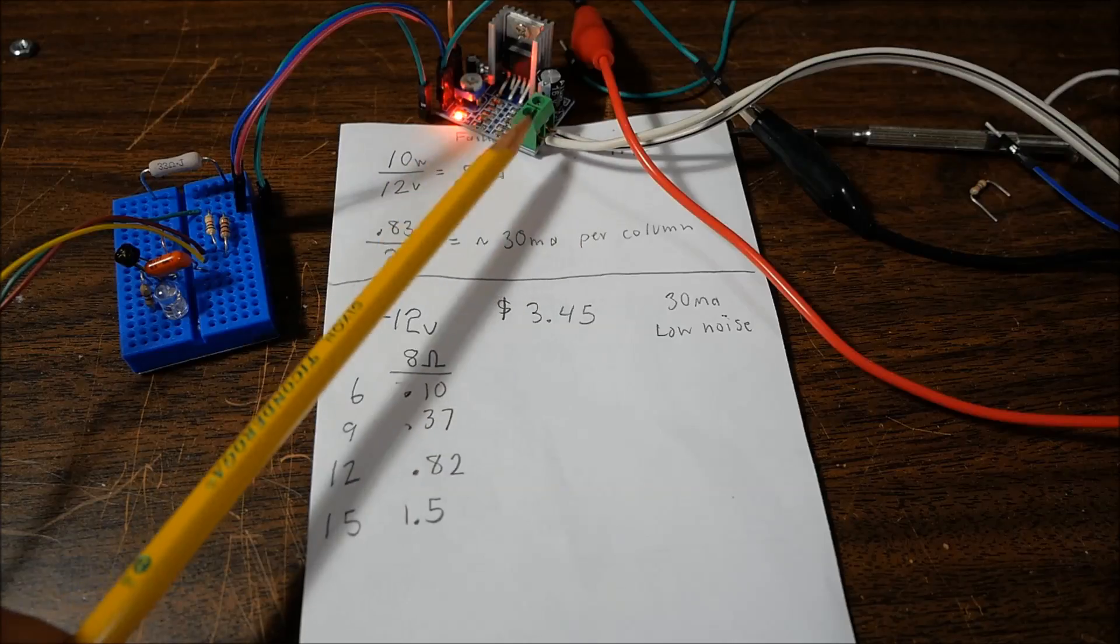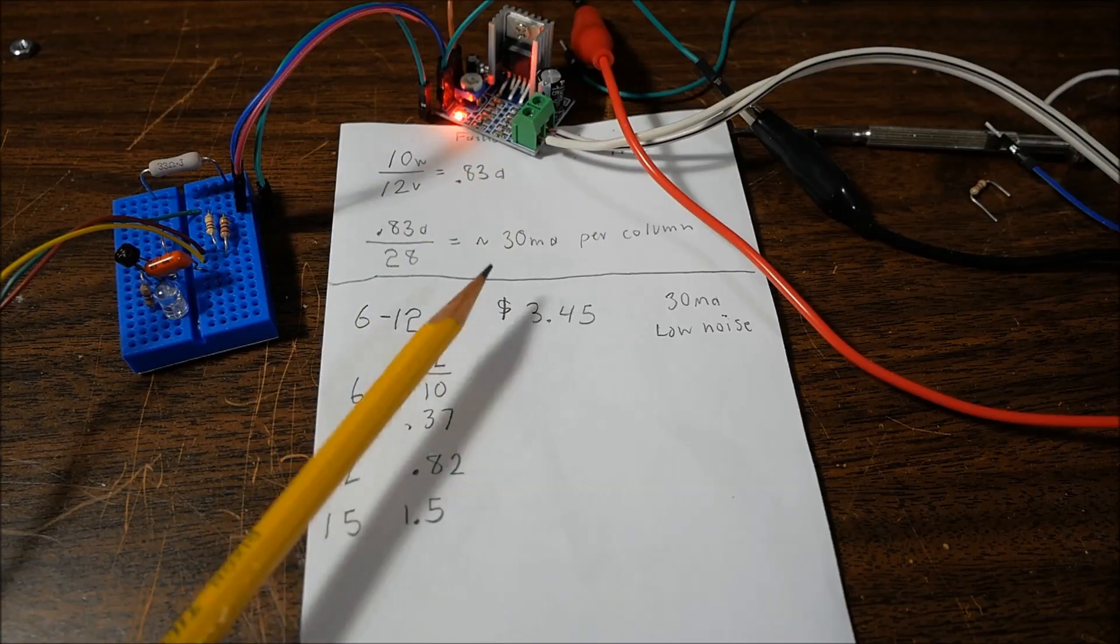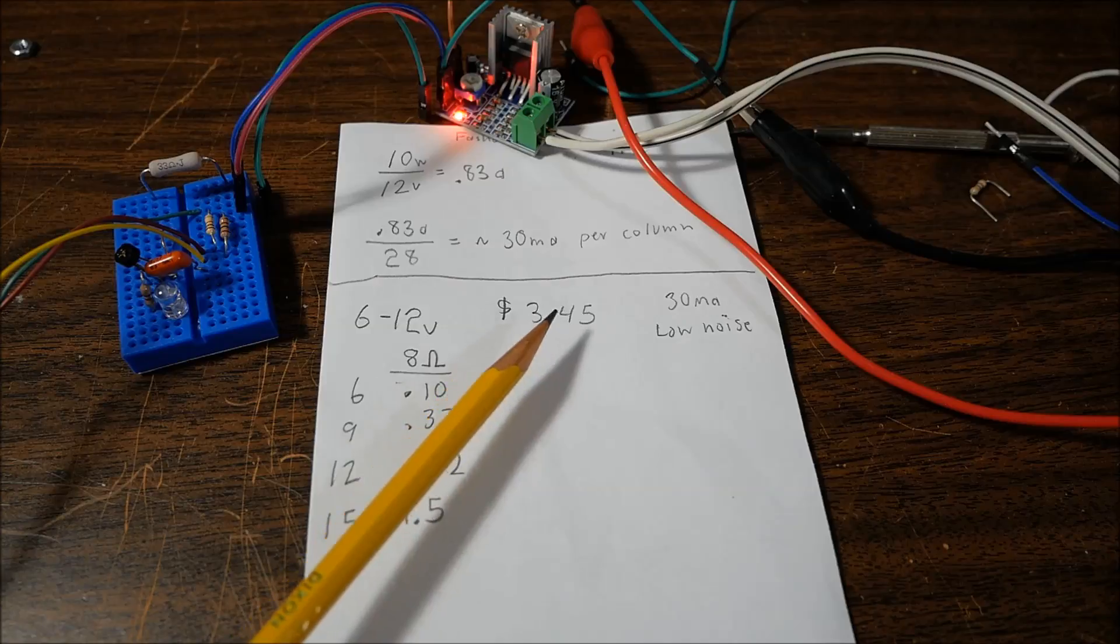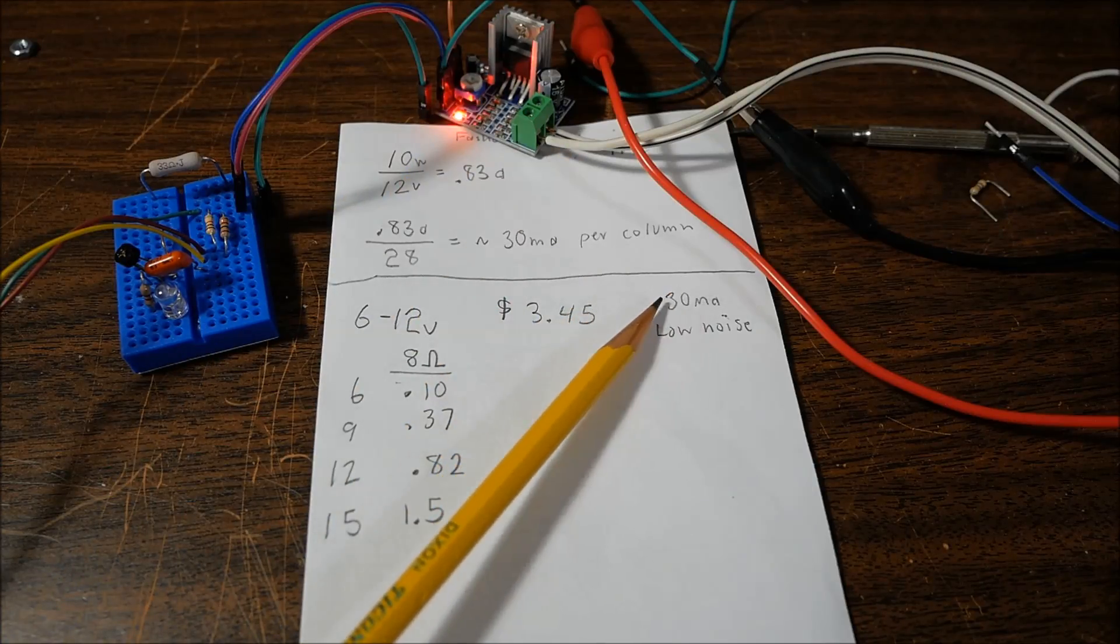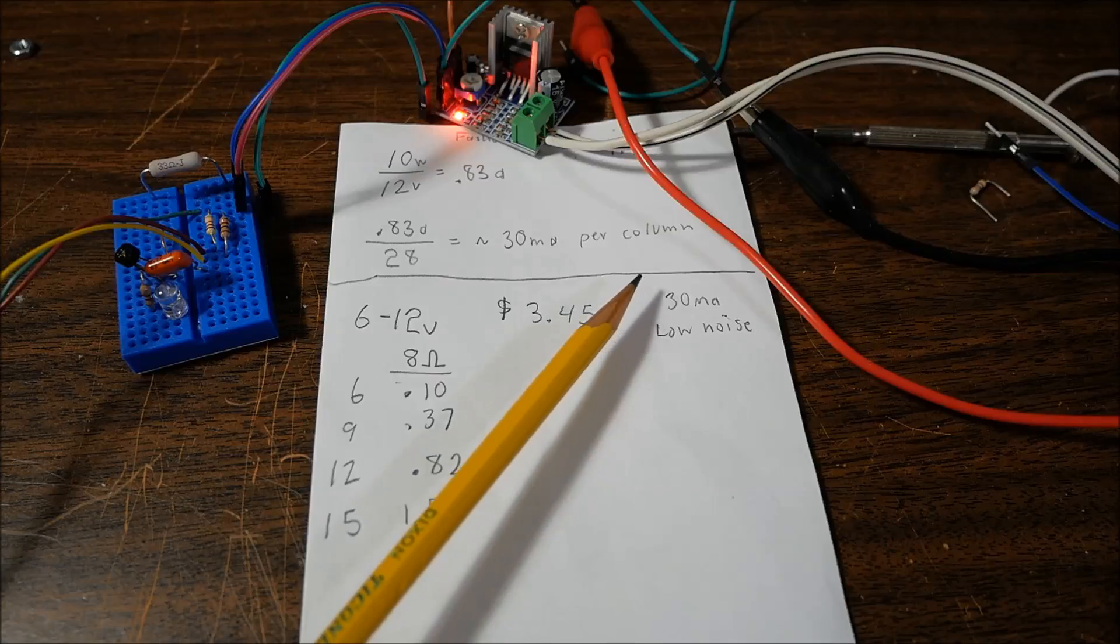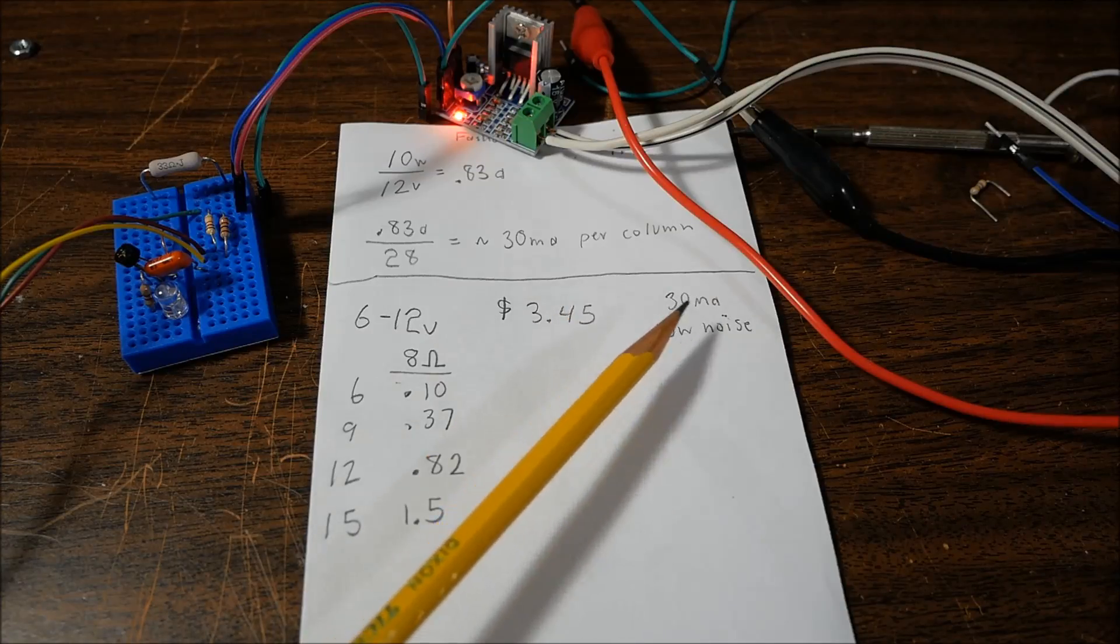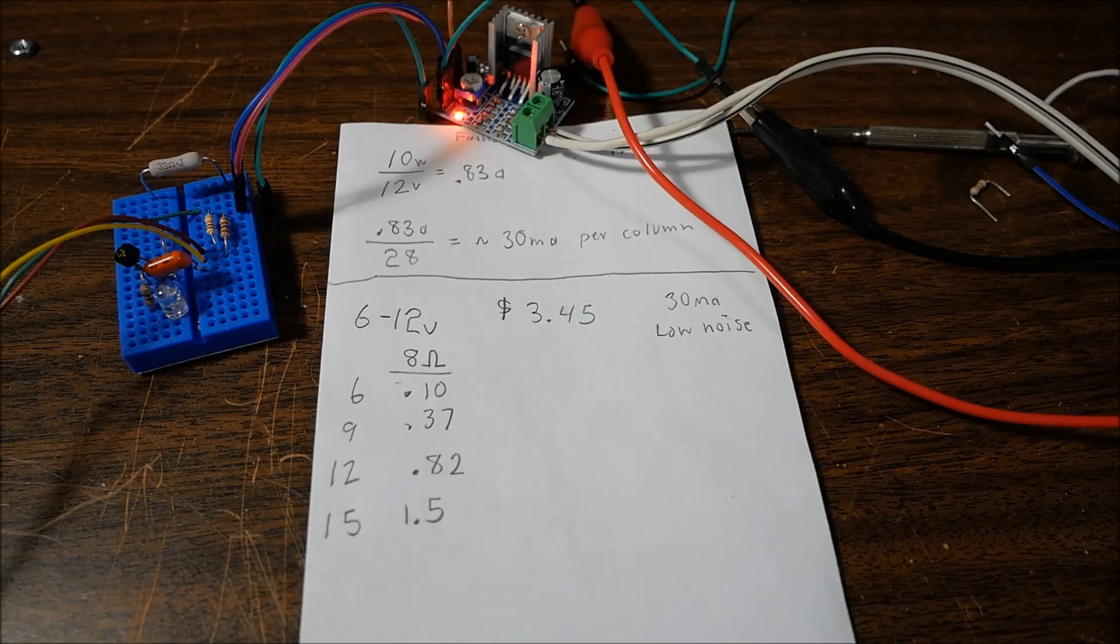These little boards are cheap. You can get 3 of them for $3.45. Quiescent current, in other words the idle current, is only 30 milliamps. It had low noise. I did test the distortion at 20 hertz and at above 10 kilohertz. And no issues with distortion. So it delivers really good, clean sound.